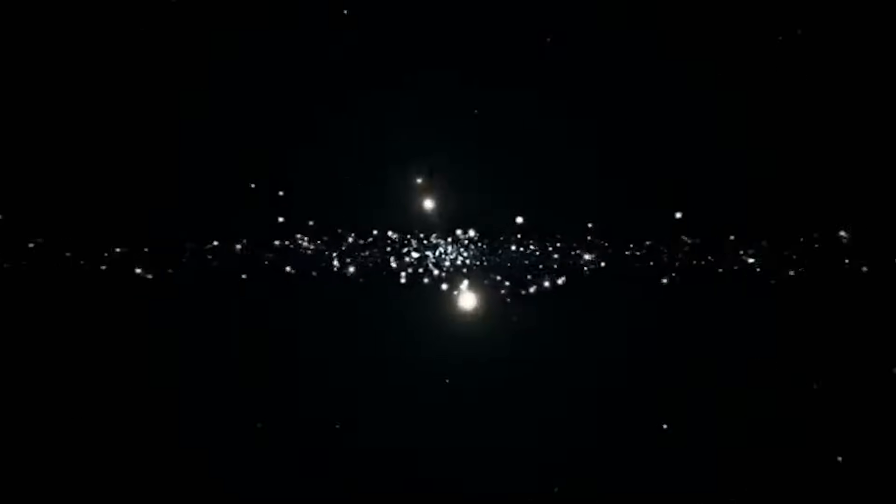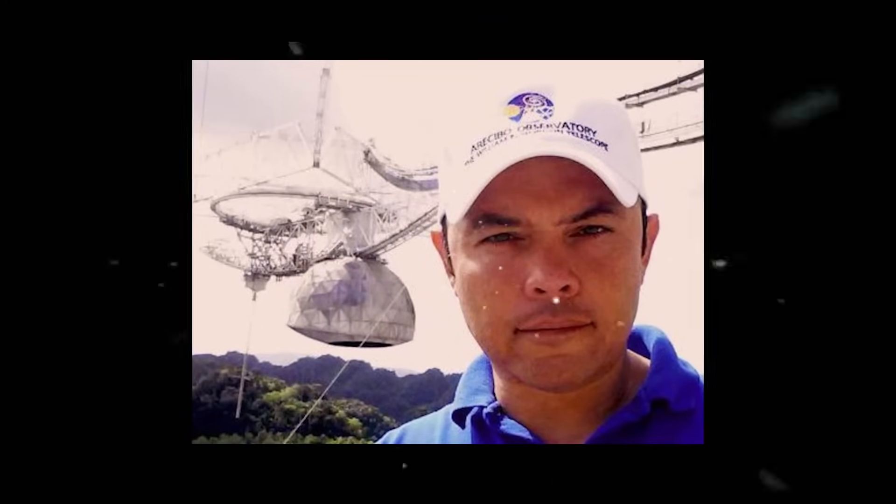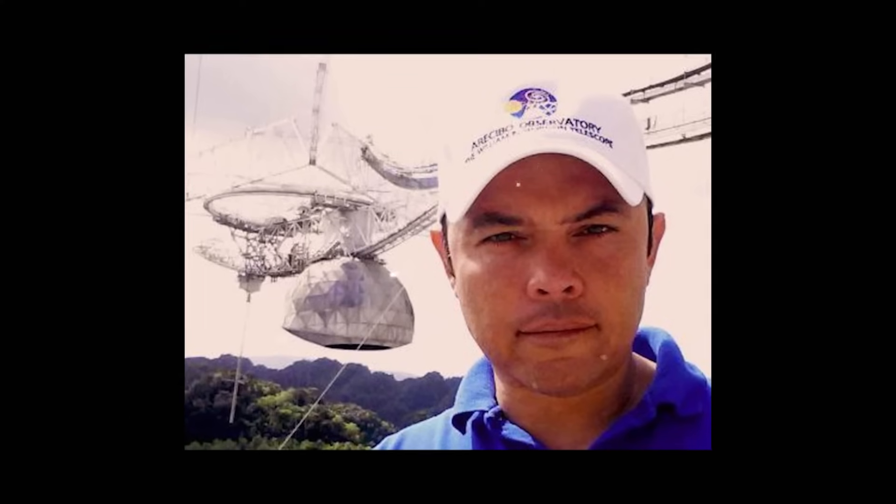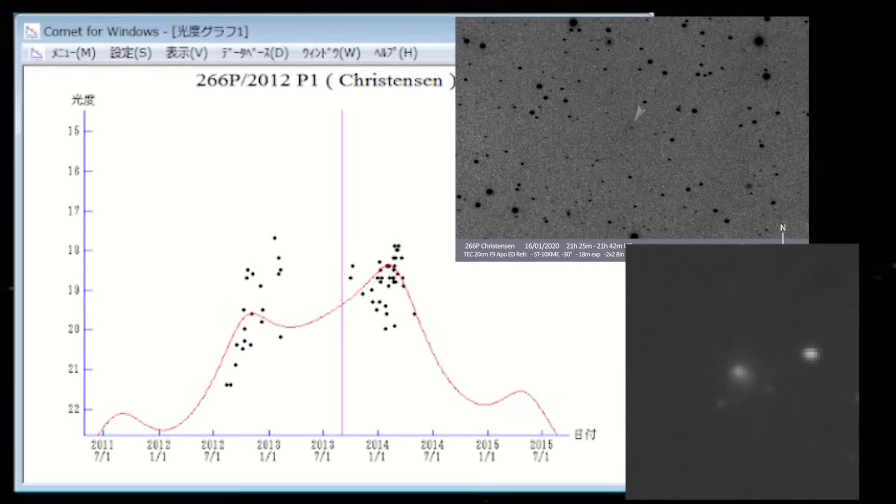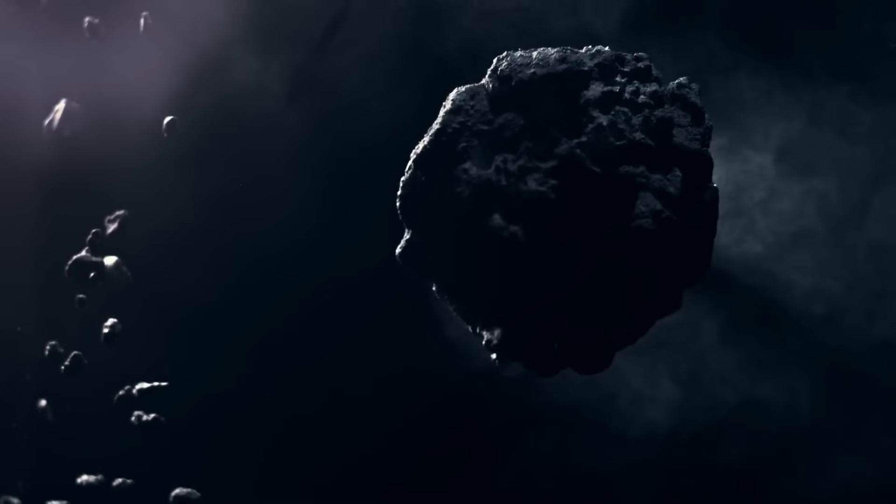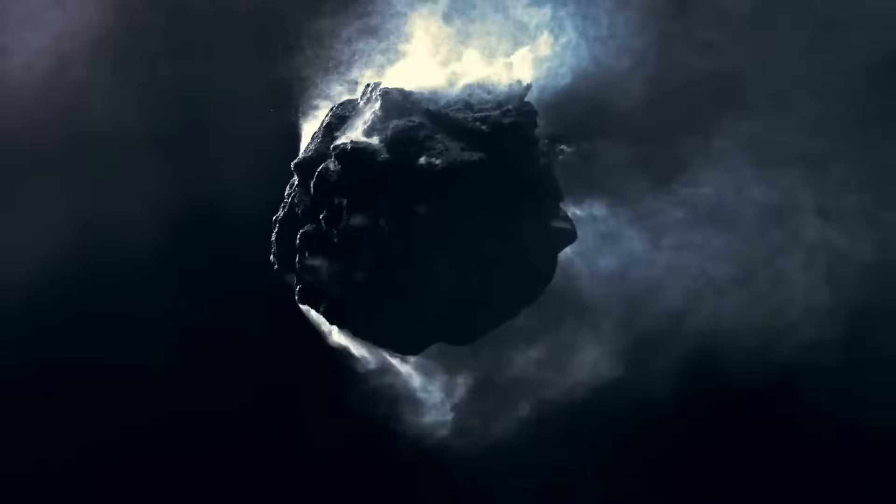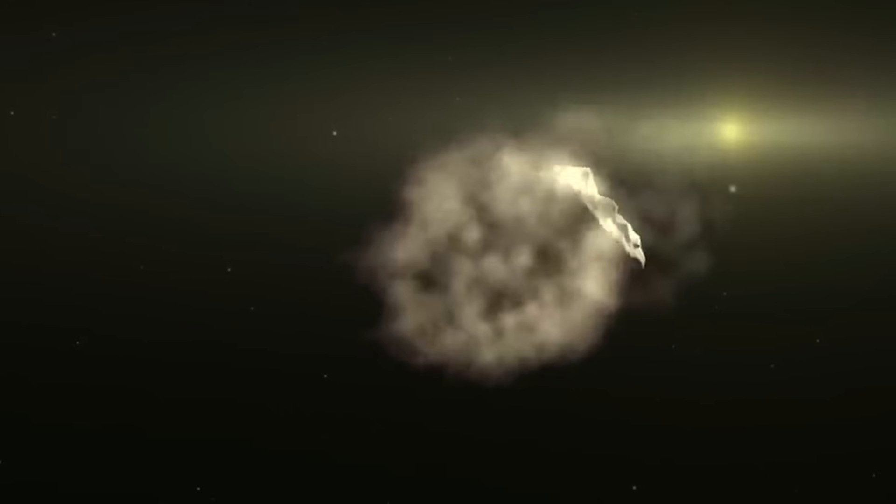Recently, scientists have proposed interesting natural explanations. For example, in 2017, Antonio Paris suggested that the signal might have come from the hydrogen cloud around comet 266P-Christiansen, which was exactly in the same spot in the sky when the signal arrived. This comet has a large hydrogen cloud that can produce radio signals. But this idea was not fully accepted, because the signal was too strong.